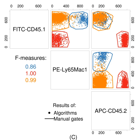Prior to analysis, flow cytometry data must typically undergo pre-processing to remove artifacts and poor quality data, and to be transformed onto an optimal scale for identifying cell populations of interest. Below are various steps in a typical flow cytometry pre-processing pipeline.